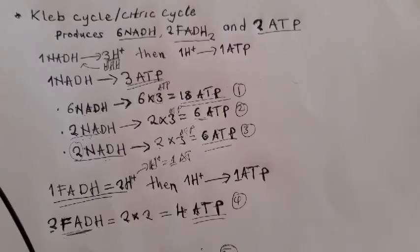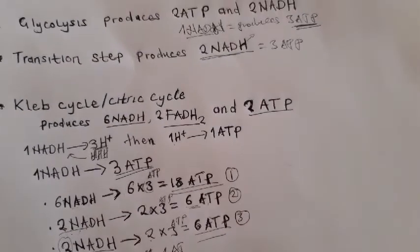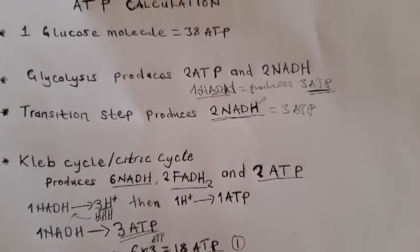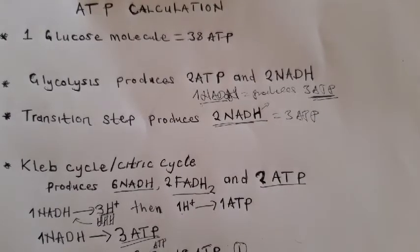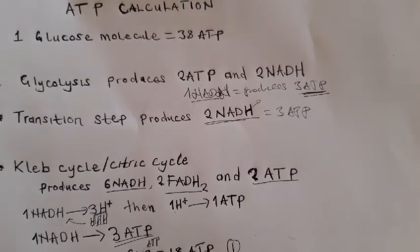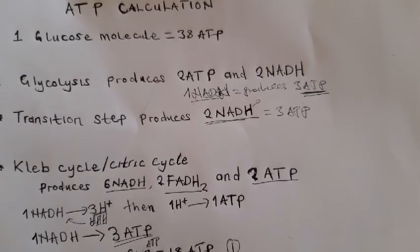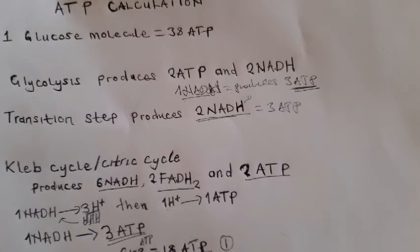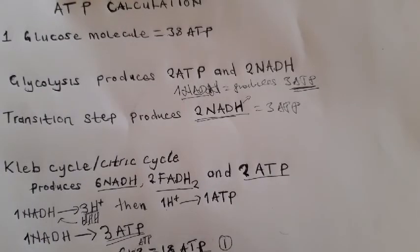In summary, we considered the ATP produced from glycolysis, the NADH produced from glycolysis and the Krebs cycle, the transition step, and the direct ATP produced at each stage. The key thing to remember is that NADH is the most energy-generating molecule, producing more ATP compared to FADH2.